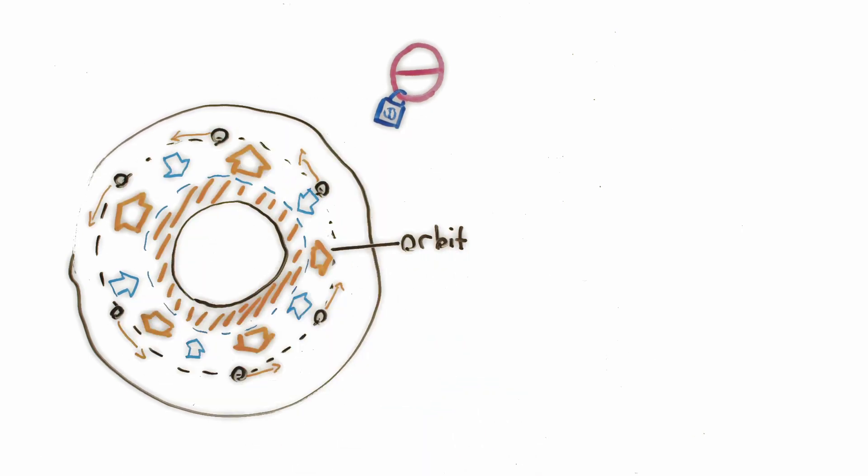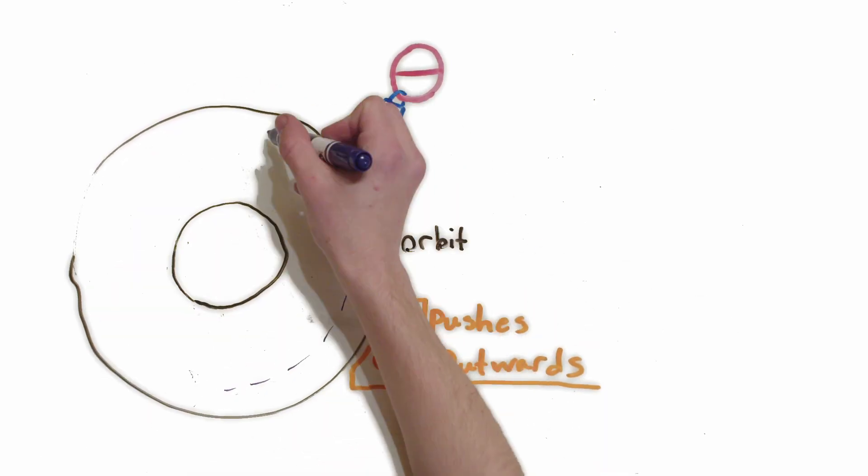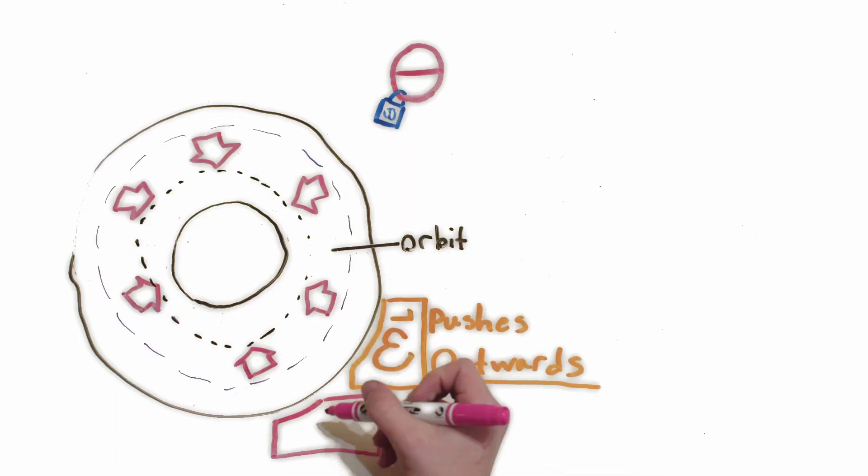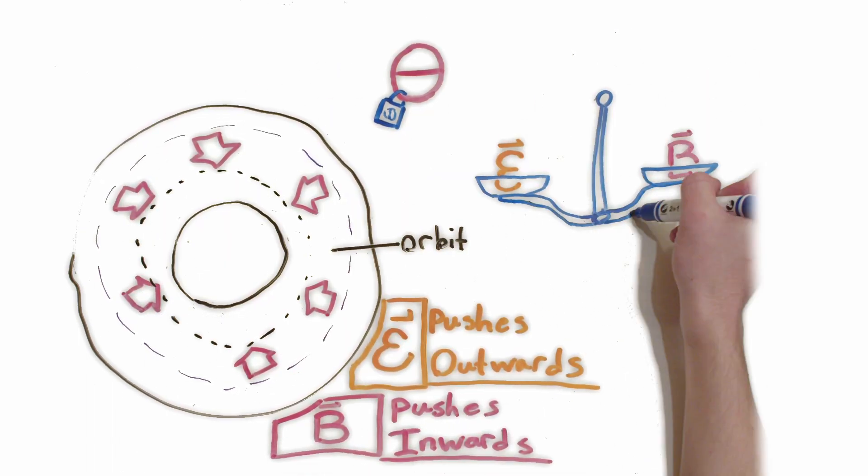This will make the electron travel faster, restoring its orbit. If the radius increases, though, the magnetic force created by the coils will be greater than the electric force, and it will pull the particle into a tighter orbit.